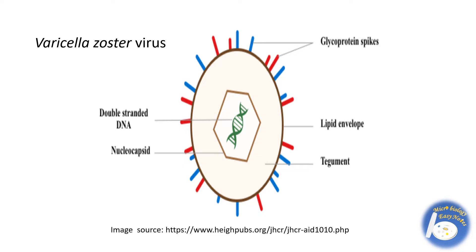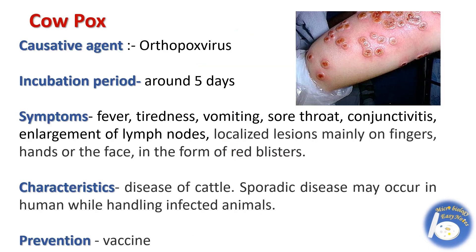This is the diagram of Varicella-Zoster virus. This virus has double-stranded DNA as the genetic material. It also has a lipid envelope and contains glycoprotein spikes which are responsible for the disease.